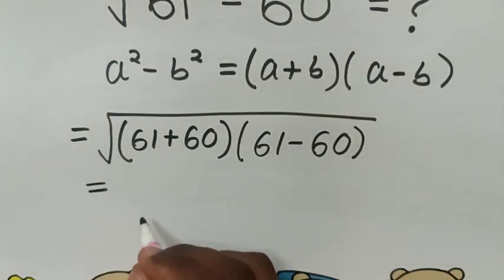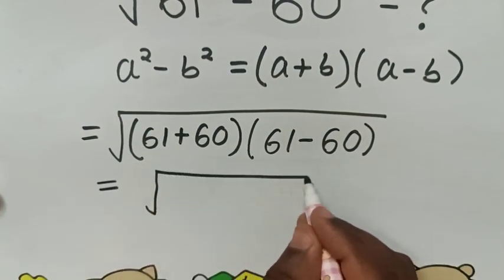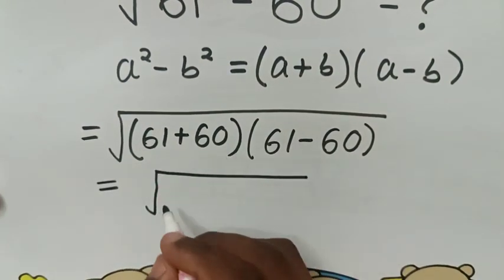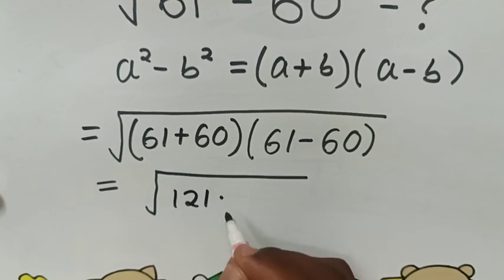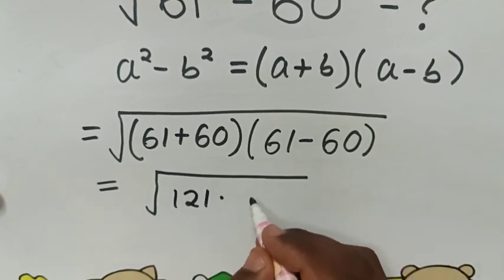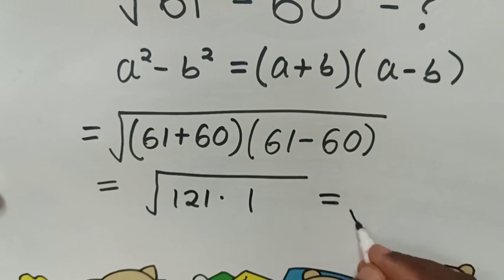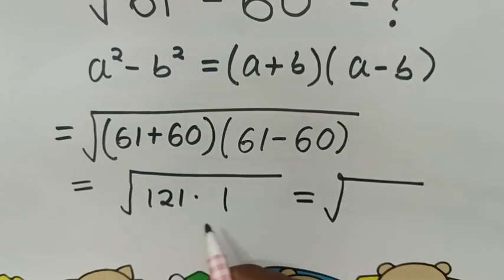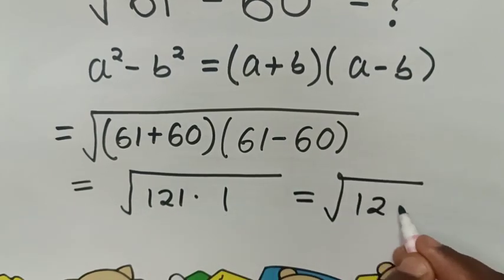Then, it will be equal to square root of 61 plus 60 is 121 times 61 minus 60 is 1. Then, it will be equal to square root of this times this is 121.